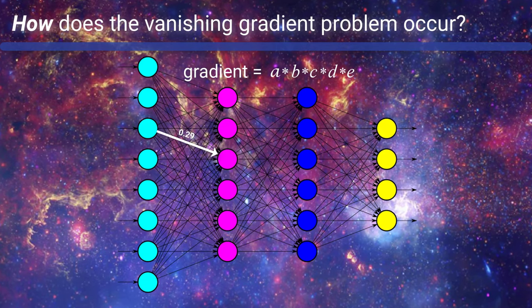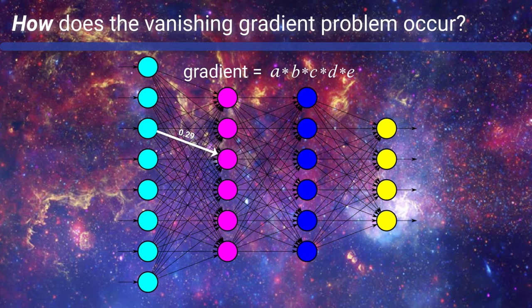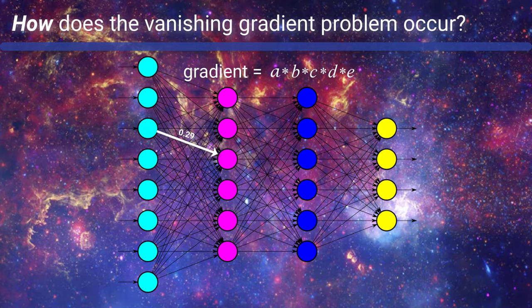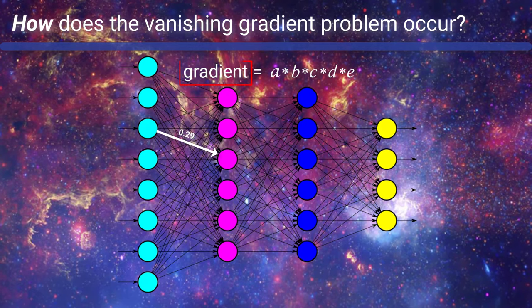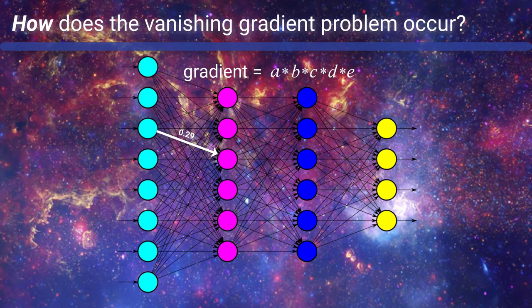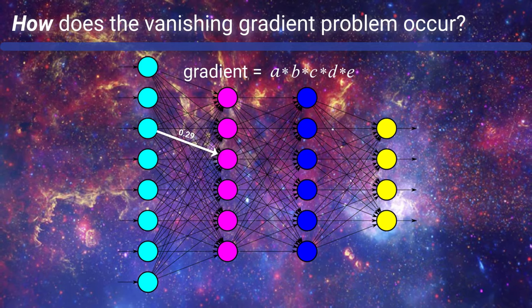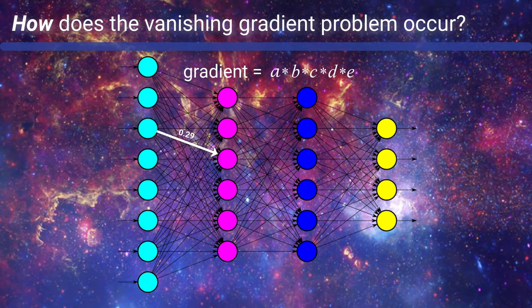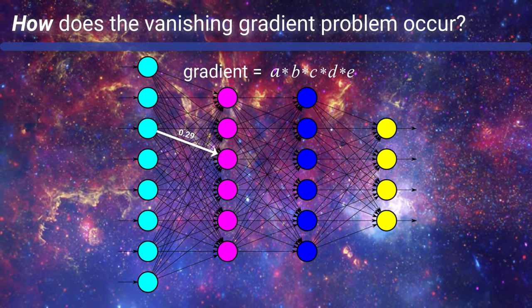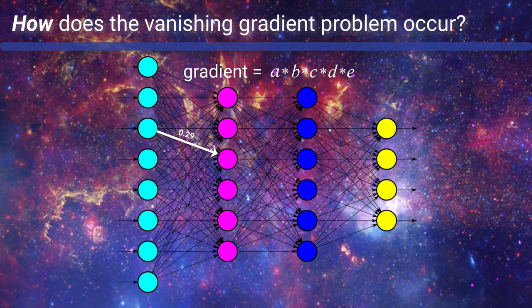Well, the product of a bunch of numbers less than one is going to give us an even smaller number, right? Okay, cool. So as we mentioned earlier, we now take this result, the small number, and update our weight with it. Recall that we do this update by first multiplying this number by our learning rate, which itself is a small number, usually ranging between .01 and .0001. So now the result of this product is an even smaller number.